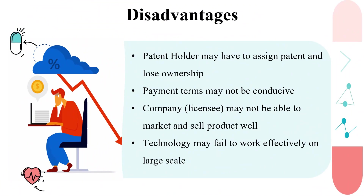Even though there are lots of advantages of patent licensing, sometimes the relationship between the parties turns out to be really disastrous. If a patent is assigned, the patent holder may lose ownership of the patent, and things become even worse if the payment terms are not conducive. The company or licensee may not be able to market and sell the product as anticipated in the beginning. Sometimes the patented technology fails to work effectively on a large scale, or market demand may decline — due to all these reasons, licensing may turn out to be a very bad option.